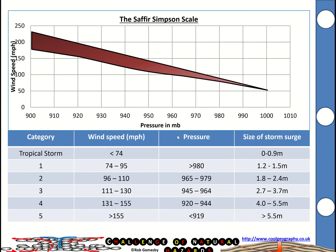Tropical storms are measured on the Saffir-Simpson scale. As wind speed goes up, the pressure is lower — so where we get low pressures, that's the highest wind speeds. Tropical storms start at 74 miles an hour, and a category five storm would be in excess of 155 miles an hour. The storm surge also increases with category — a storm surge is a really high sea created by the wind and low pressure blowing seawater onto the land, and that's what often kills a lot of people.